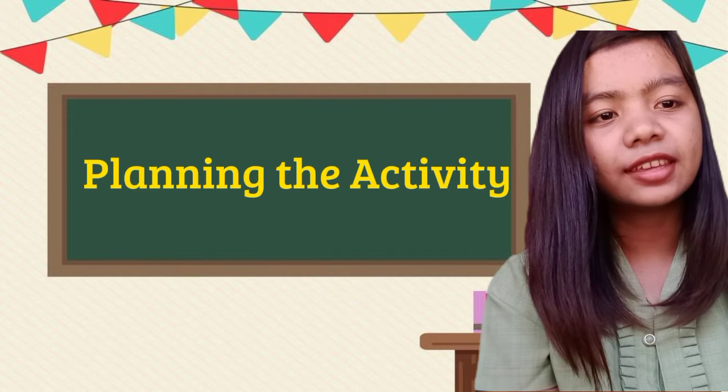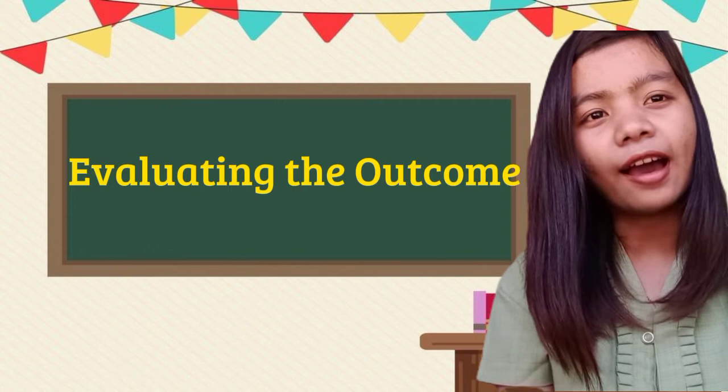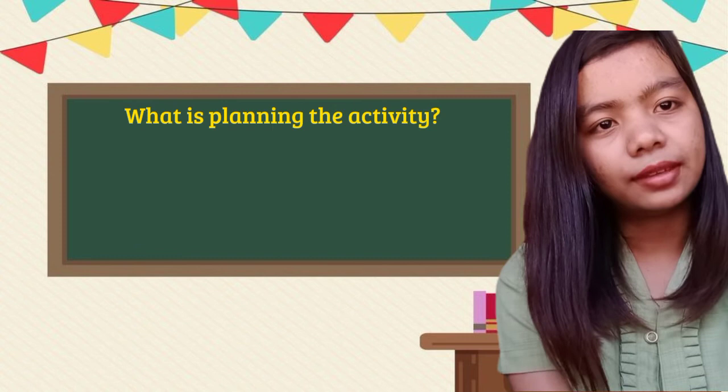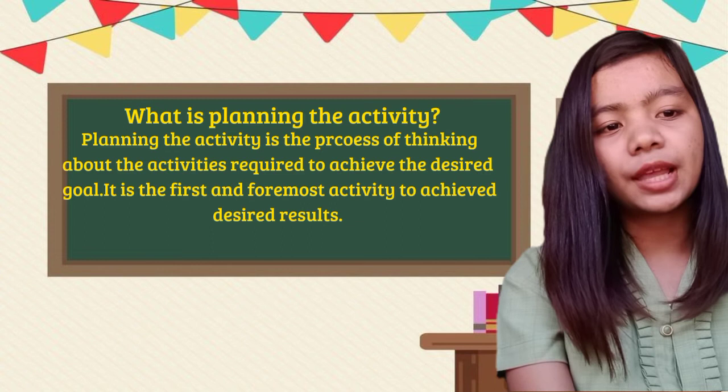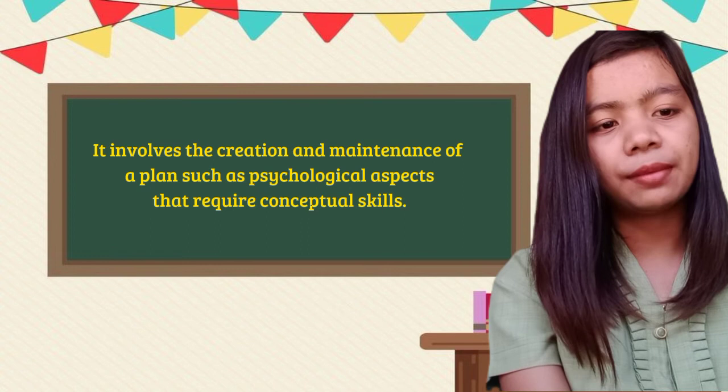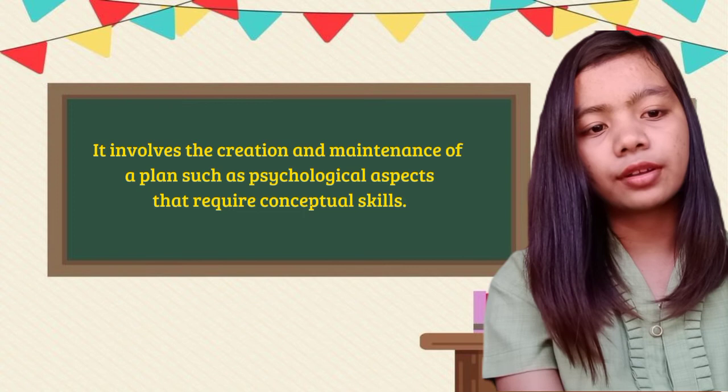A deductive lesson involves three initiatives. First, planning the activity. Second, executing the activity. Third, evaluating the outcome. Planning the activity is the process of thinking about the activities required to achieve the desired goals. It is the first and foremost activity to achieve the desired result. It involves the creation and maintenance of a plan, including psychological aspects that require conceptual skills.